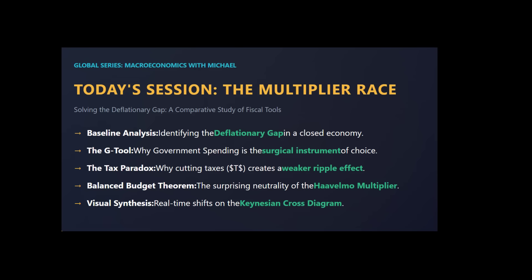Today we're doing something a little different. We're not just discussing economic policy — we are putting three very common ideas into a kind of mathematical test chamber. We always hear politicians debating: should we spend more on infrastructure, or should we give everyone a tax cut? Today we're going to see what the actual math says about which one gives you more bang for your buck.